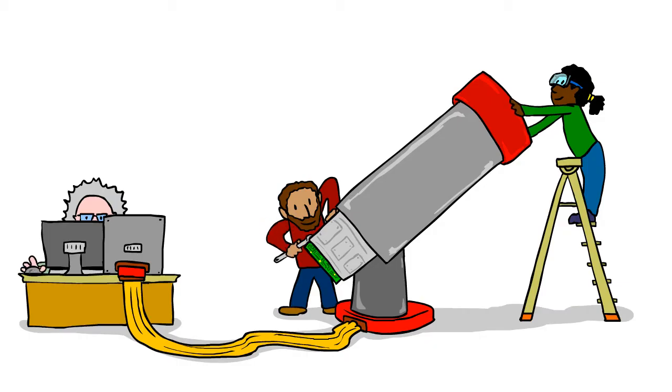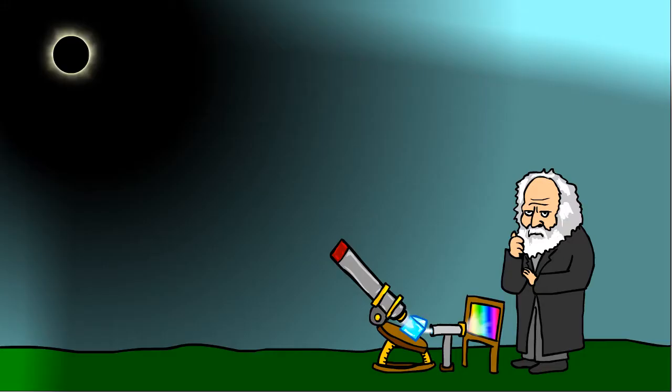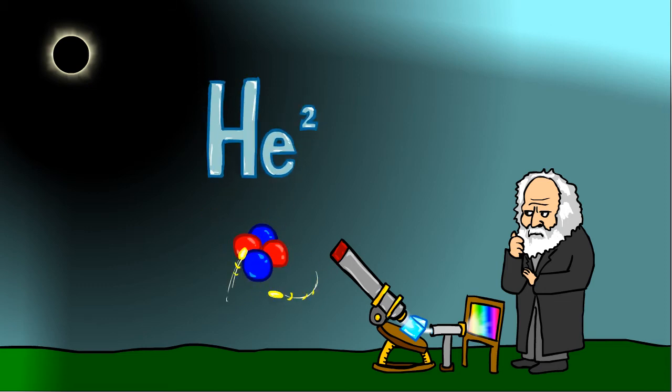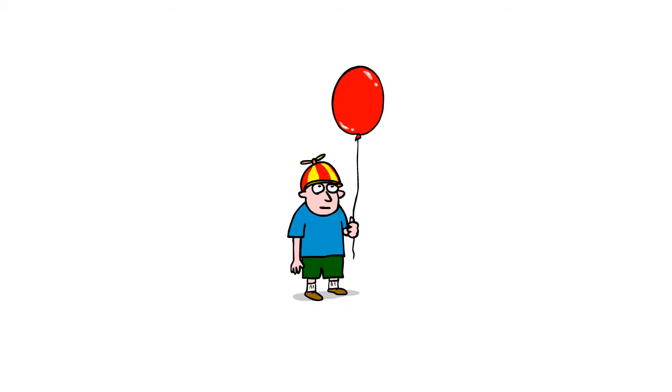As technology has improved, we've learned more and more from solar eclipses. By pointing a spectrometer at the corona during an eclipse, we accidentally discovered helium. Yep, before balloons, the only helium we knew was on the Sun.